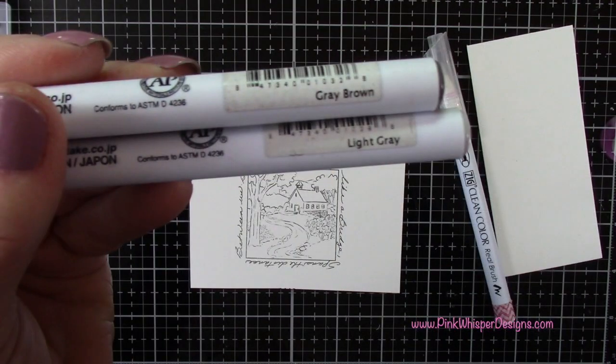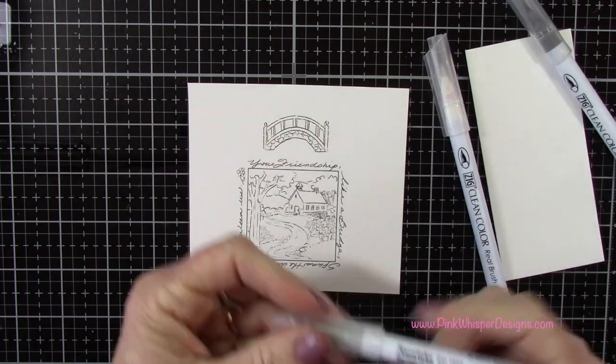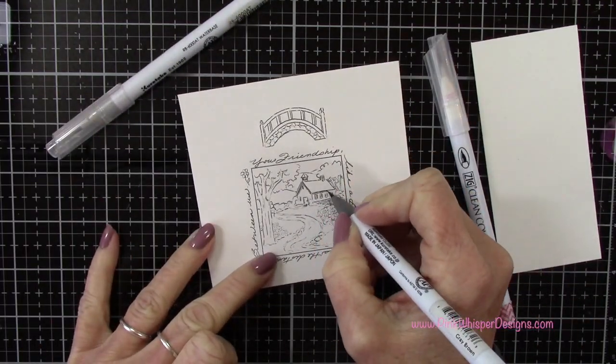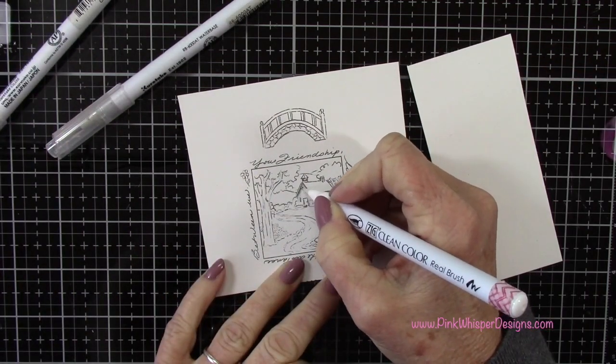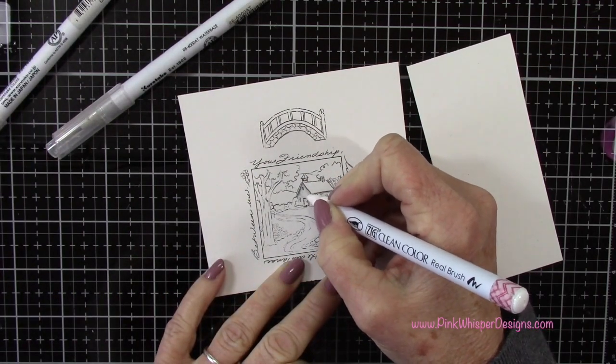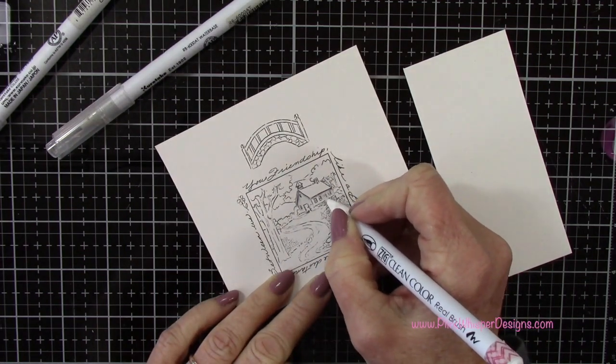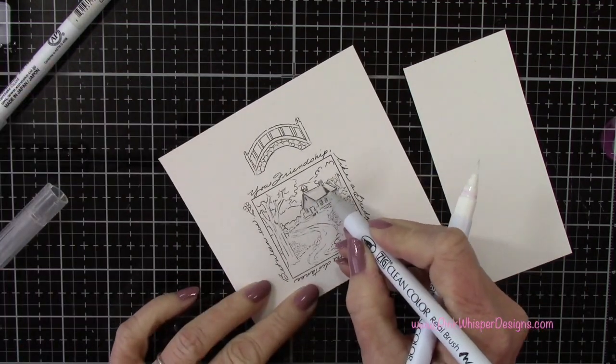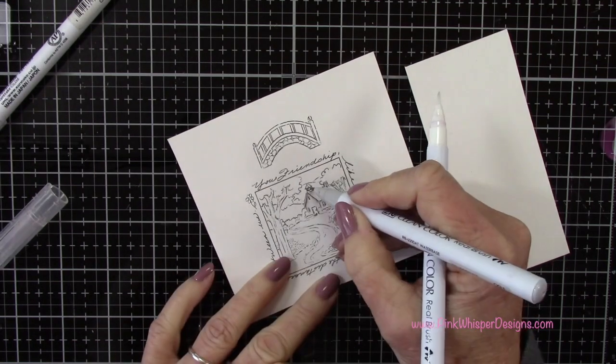To do my coloring I'm going to use gray, brown, and light gray. These are the Zig Clean Color Real Brush pens and I'm going to be doing the blending with the blender pen as well. I decided to just do this in a black and white theme. I just kept coming back to this, I couldn't seem to get it out of my head. I was going to do some coloring with different colors and then I just kept coming back to this gray palette.